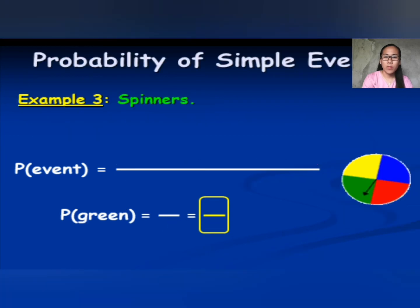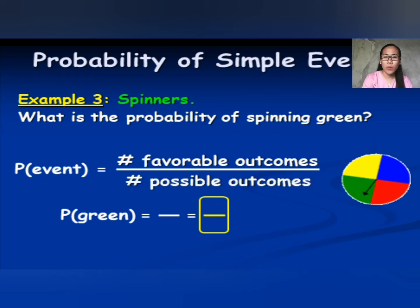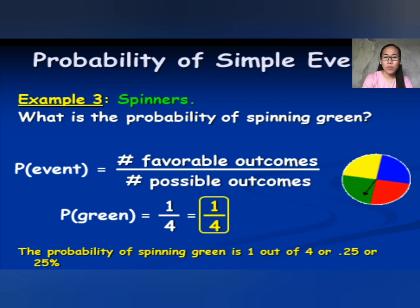Next example: spinners. What is the probability of spinning green? In that spinner there are 4 colors: yellow, blue, red, and green. We get the number of favorable outcomes divided by the number of possible outcomes. The probability of getting green is 1 favorable outcome out of 4 possible outcomes. So the probability of spinning green is 1 out of 4, or 0.25, or 25%.